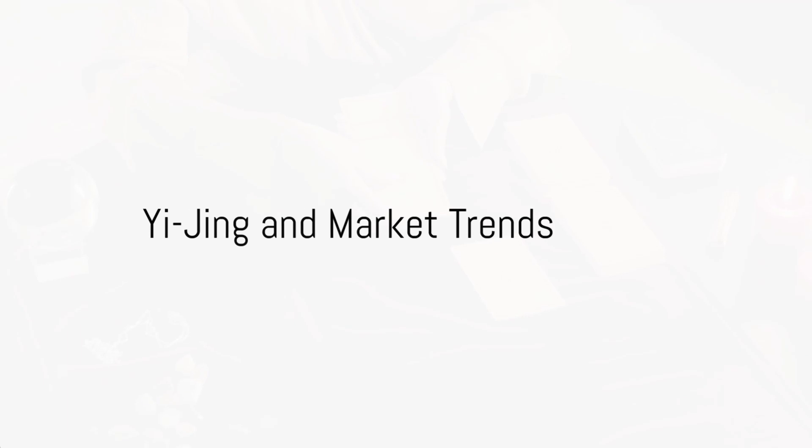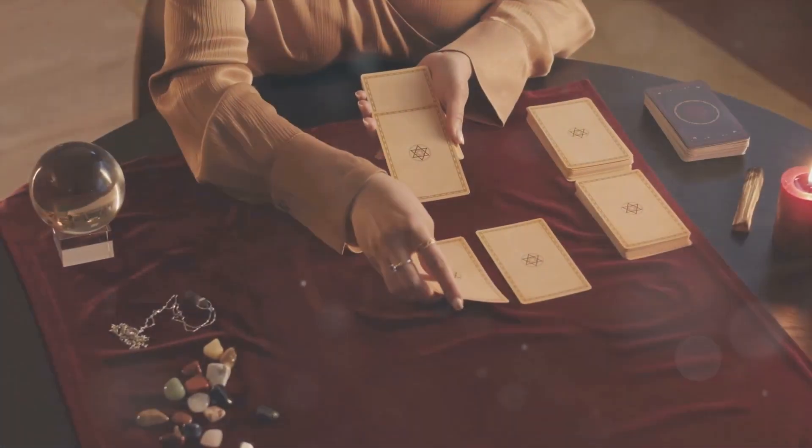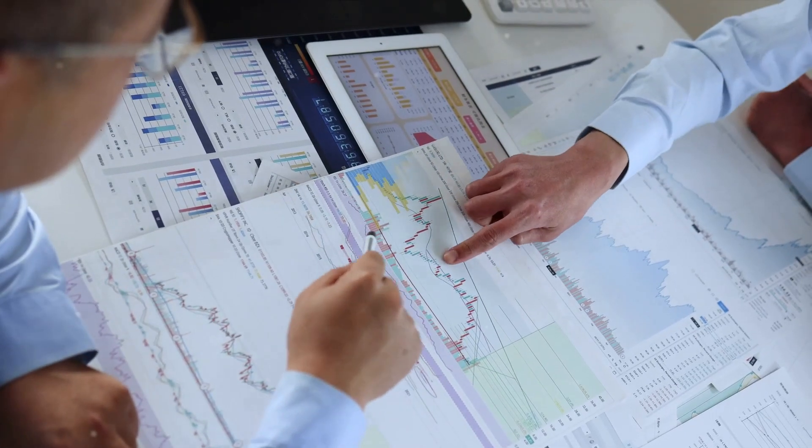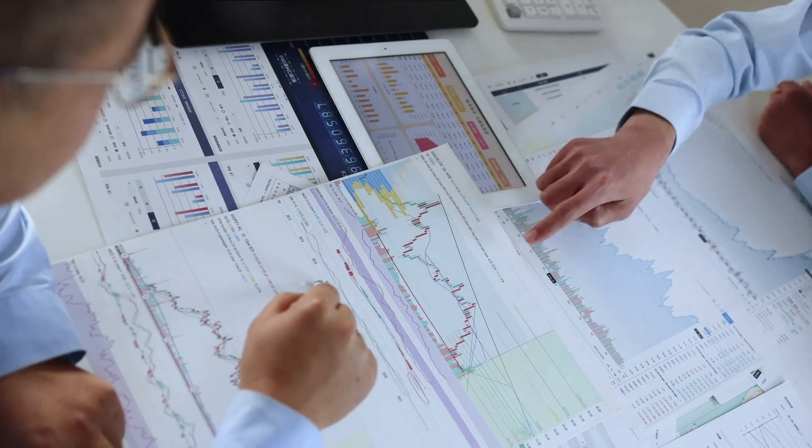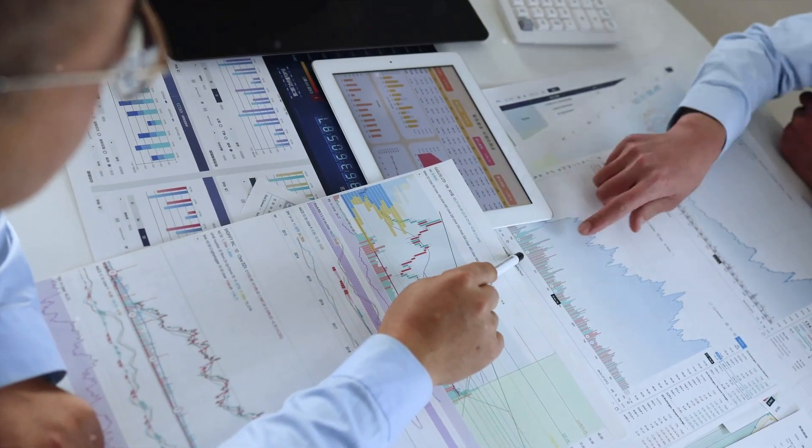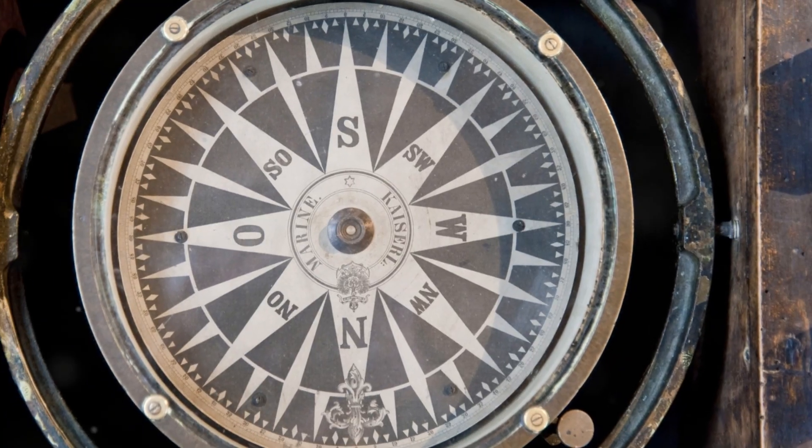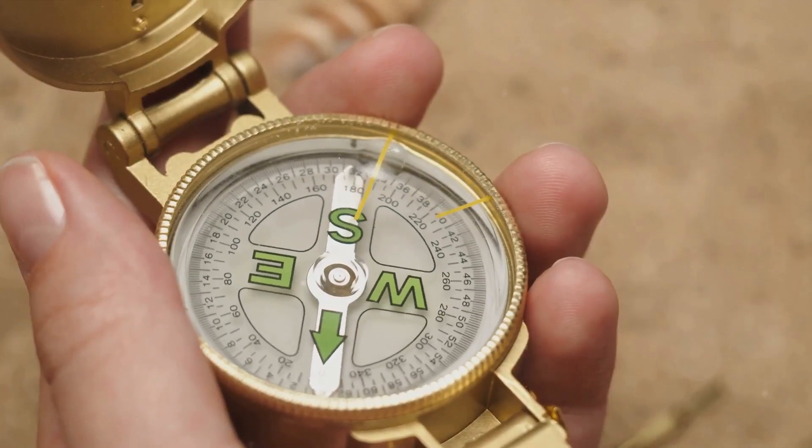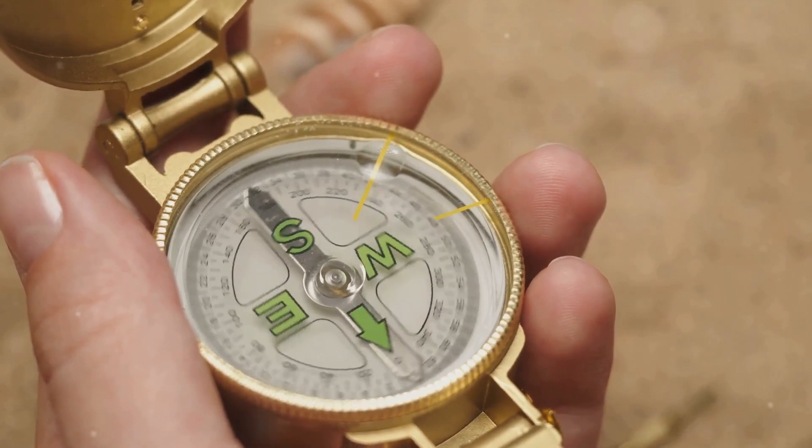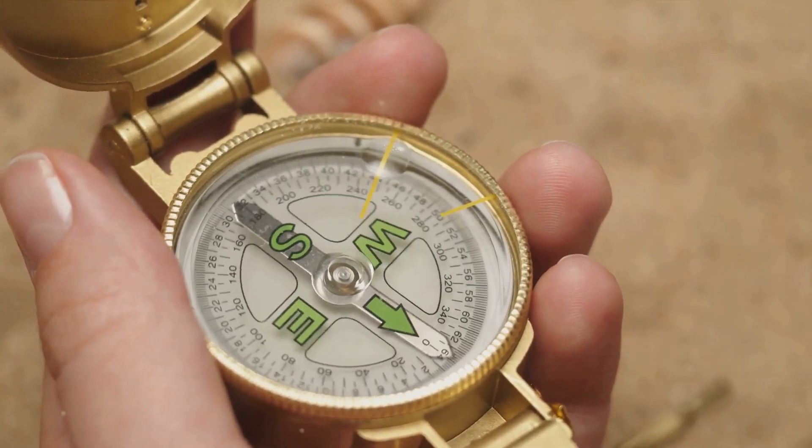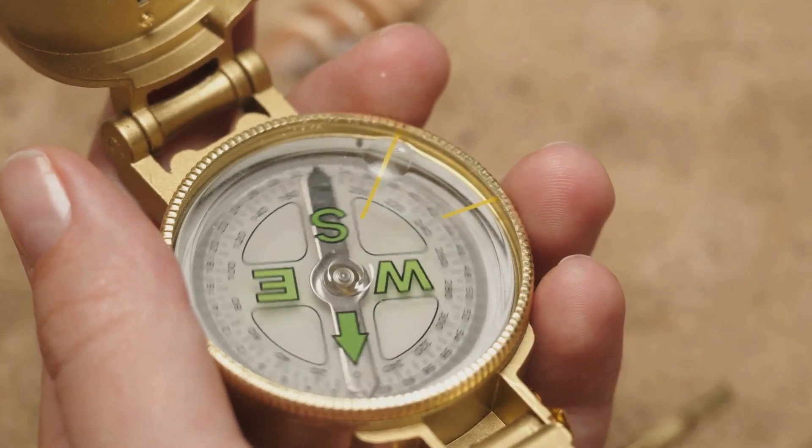But how does an ancient text relate to market trends? The Yijing provides a roadmap, a guide to navigate the complex terrains of the market. It's akin to a compass that points the way, helping investors anticipate market trends and make strategic decisions.